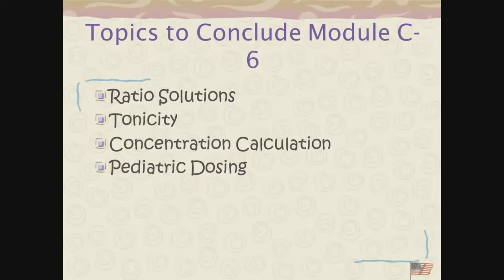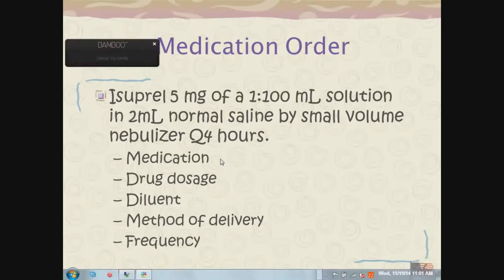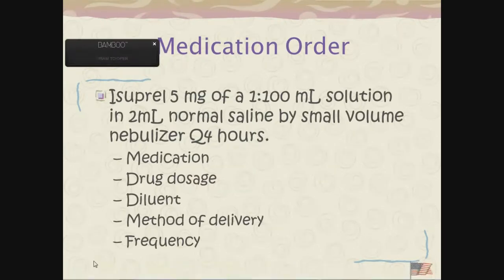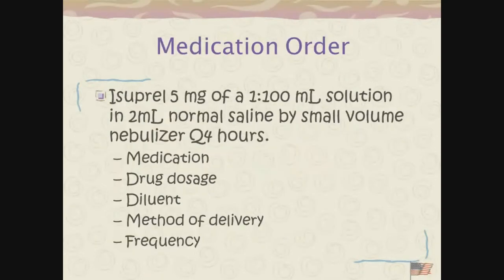We're dealing with having two different concentrations of solutions, and in pediatric. So here's an order, perhaps, that we get. If you ever see this order, run quickly in the other direction because isoproterenol is extreme. It's an old bronchodilator, but there are better drugs to use.